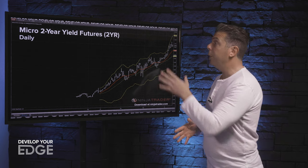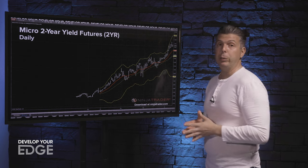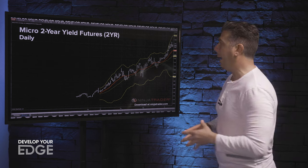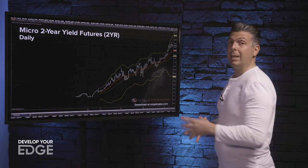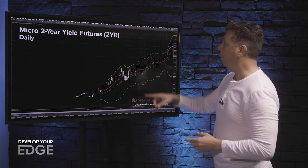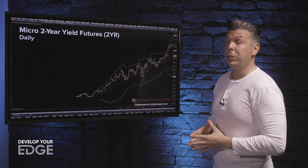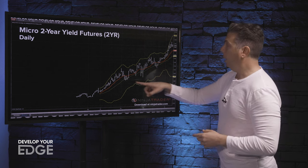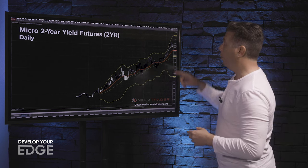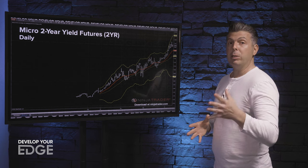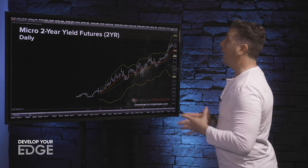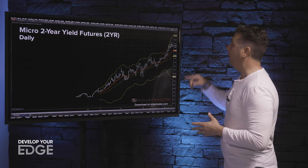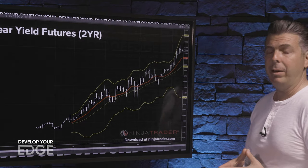We're going to start with the micro two-year yield futures, symbol 2YY. Here we are on the daily with the indicators: 20-period, three standard deviation Bollinger Bands. Red is the 10-day simple moving average. That gold moving average is the 20-day moving average, the middle Bollinger Band. Here we are at the short end of the curve with the two-year chart, right now trading 0.97.